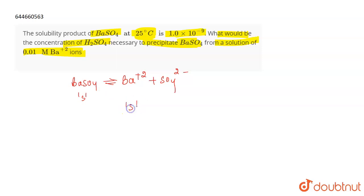You're given 0.01 molar Ba²⁺ ions. The solubility product is also given. Solubility product is the product of the concentration of the ions that are dissociated. The concentration of Ba²⁺ is 0.01 and